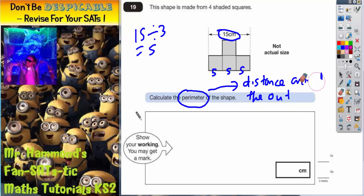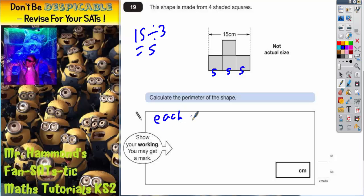Okay, I'm just going to rub this out to give myself a bit of extra room to make sure we don't get lost amongst all the markings. So each square must be five wide, and that could be the first thing that you write down. So each square is five centimeters wide because 15 divided by three equals five centimeters.